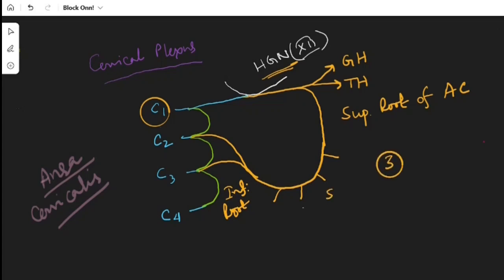How? Nerve to sternohyoid, nerve to sternothyroid and two nerves to omohyoid muscle, one for superior belly and another for inferior belly.